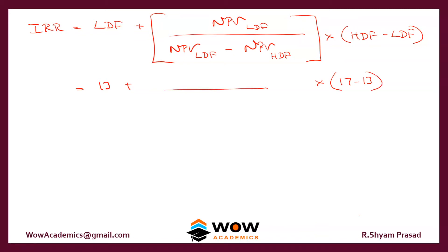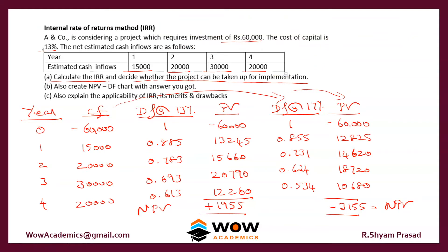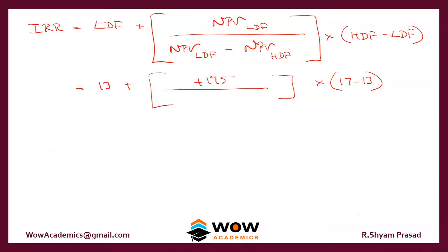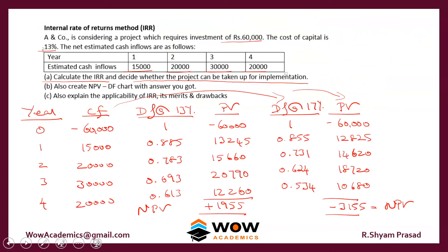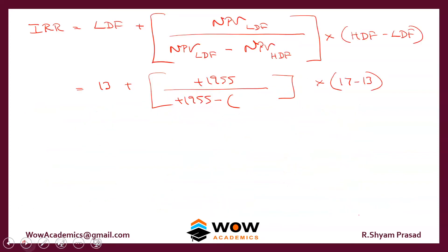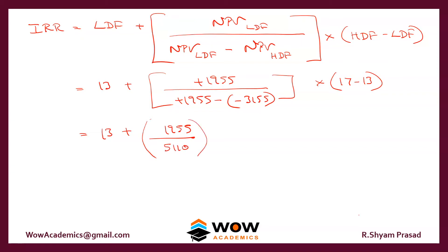We now insert the other numbers into the formula. The NPV at the lower discount factor is plus 1,955. There is a minus sign in the formula, and the NPV at the higher discount factor is minus 3,155. Because of the minus-minus, those values get added together, giving us 5,110. The difference between the discount rates is 4. We solve the entire bracket.